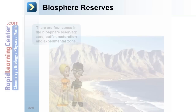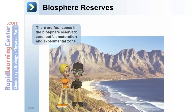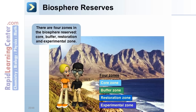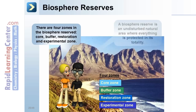Biosphere reserves have four zones: core, buffer, restoration, and experimental. A biosphere reserve is an undisturbed natural area where everything is protected in its totality.